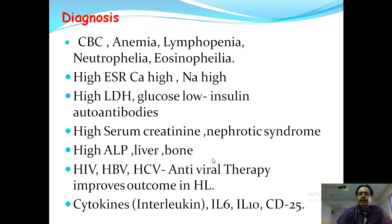Pre-treating HIV and hepatitis B and C with antiviral and antiretroviral therapy prior to chemotherapy improves outcomes in Hodgkin's lymphoma. You can also check cytokine levels, especially IL-6, IL-10, and CD25.